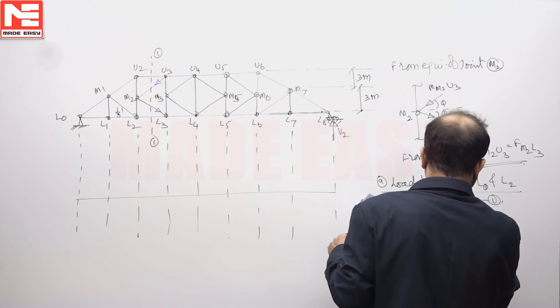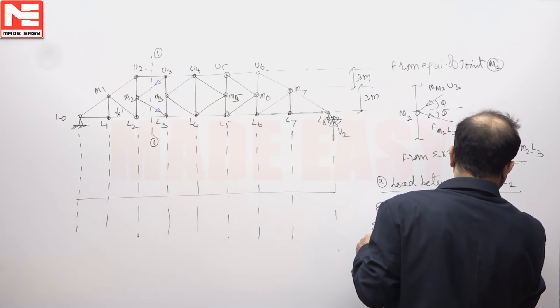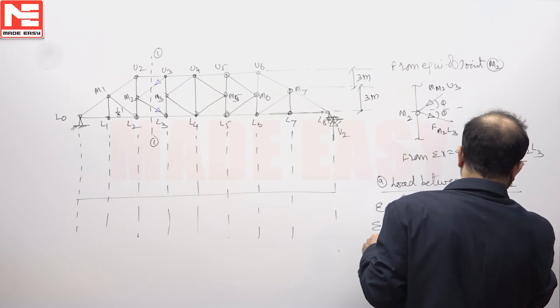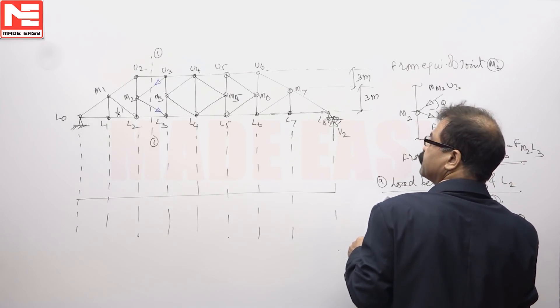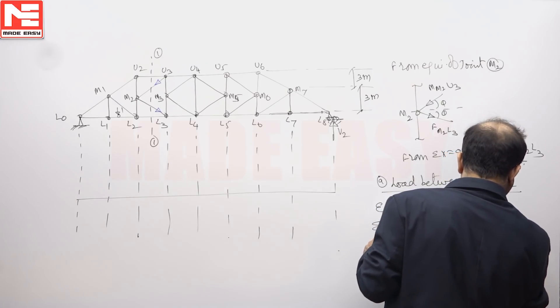So you can write FM2 U3 sin 36.87 minus FM2 L3 sin 36.87.